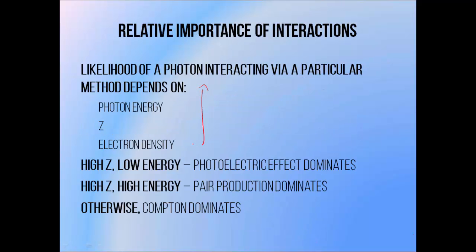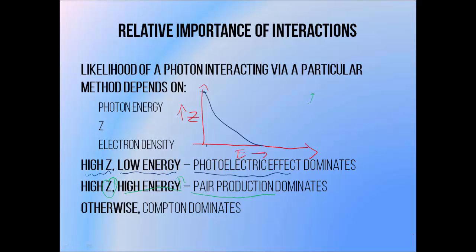The likelihood of occurrence of different photon interaction types depends upon the photon energy, the material atomic number, and sometimes the electron density as well. The photoelectric effect tends to be the most common interaction type in high atomic number materials when the photon energy is low but still higher than the electron binding energies. The pair production effect is most likely when both the material atomic number and the photon energy are high, down to the lower threshold of 1.022 MeV, below which the probability becomes zero. The Compton interaction is the most common within the range of clinically utilized beam energies; it has a low probability at very low energies and after reaching a peak it tends to drop off slowly with energy.